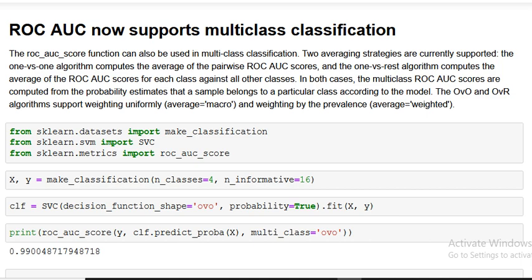What we see here is ROC AUC curve now supports multi-class classification. In my earlier videos, you might have seen that there was a new plotting API: ROC AUC curve plot, precision recall plot, confusion matrix plot.